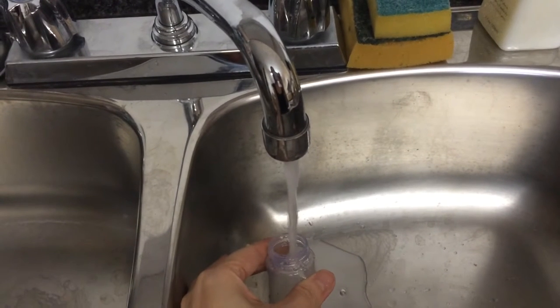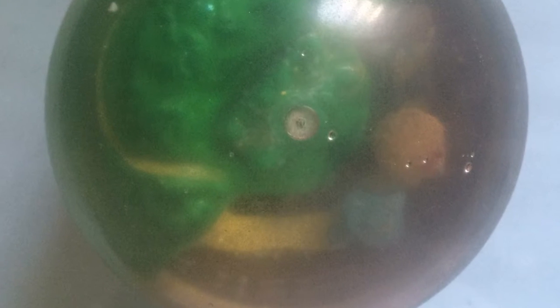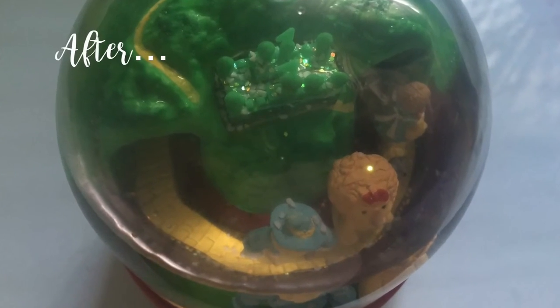Fill the rest of the bottle with water and then you can use it. This is what my snow globe looked like before and then after using my glass cleaner.